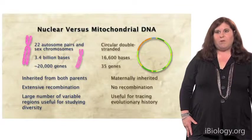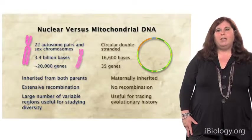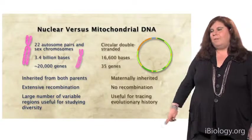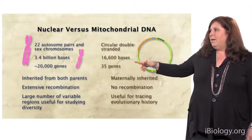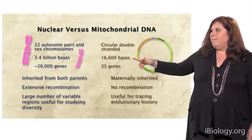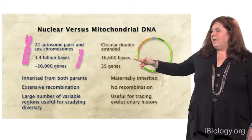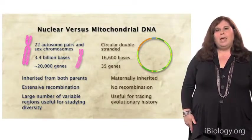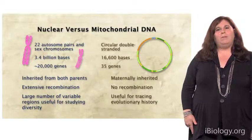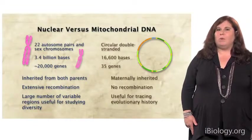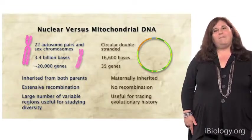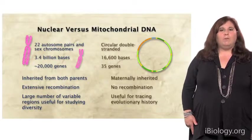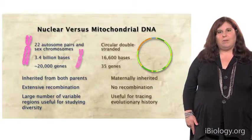It's just a little bit more difficult to trace nuclear DNA back to a single common ancestor. By contrast, the mitochondrial DNA genome is very small — only about 16,000 nucleotides in size, and it's circular. It's passed on only through the maternal lineage, there's no recombination, and it has a very high mutation rate. All of these features make it very useful for tracing evolutionary history.